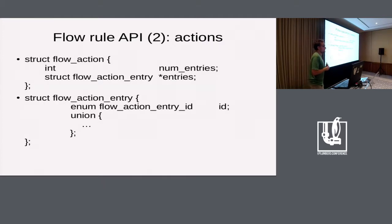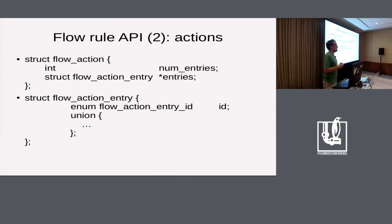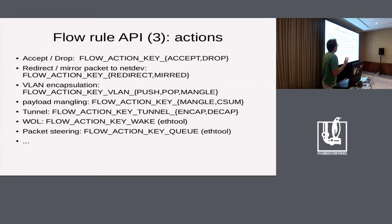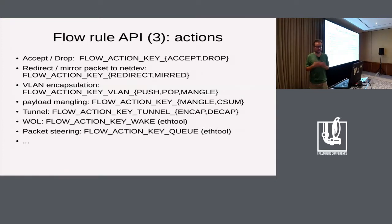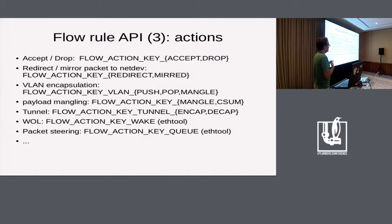The actions are based on the tcAction API. There is a flow action object containing an array of entries. Each entry has an ID that identifies the type of action, and then a union containing all the parameters that particular action needs. One of the good things about this flow rule API is that before it, you had to read all drivers in the tree to guess what actions were available for offload. Now there is a clear API, and if an action is missing, you can just add it.